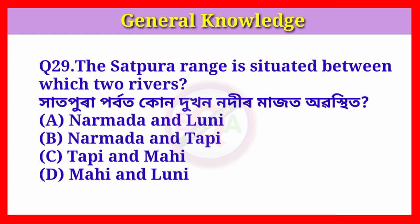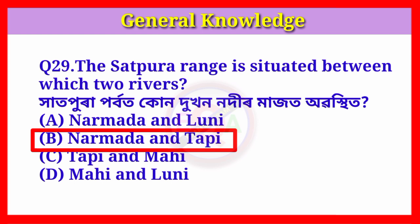Question number twenty-nine: The Satpura Range is situated between which two rivers? Answer: Option B, Narmada and Tapi.